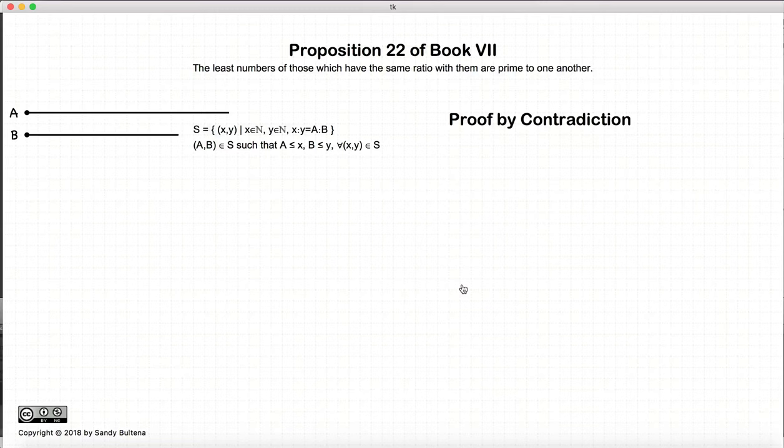To prove this, we are going to use contradiction. So again, we are starting off that A and B are the smallest two numbers to form the ratio of A to B.